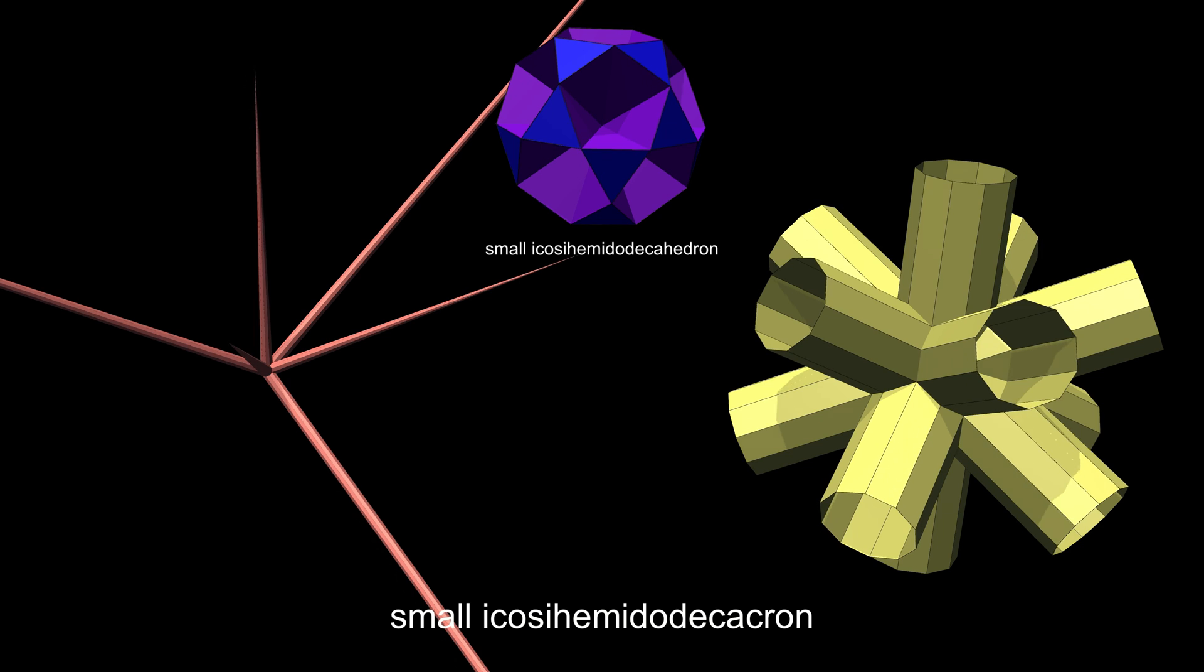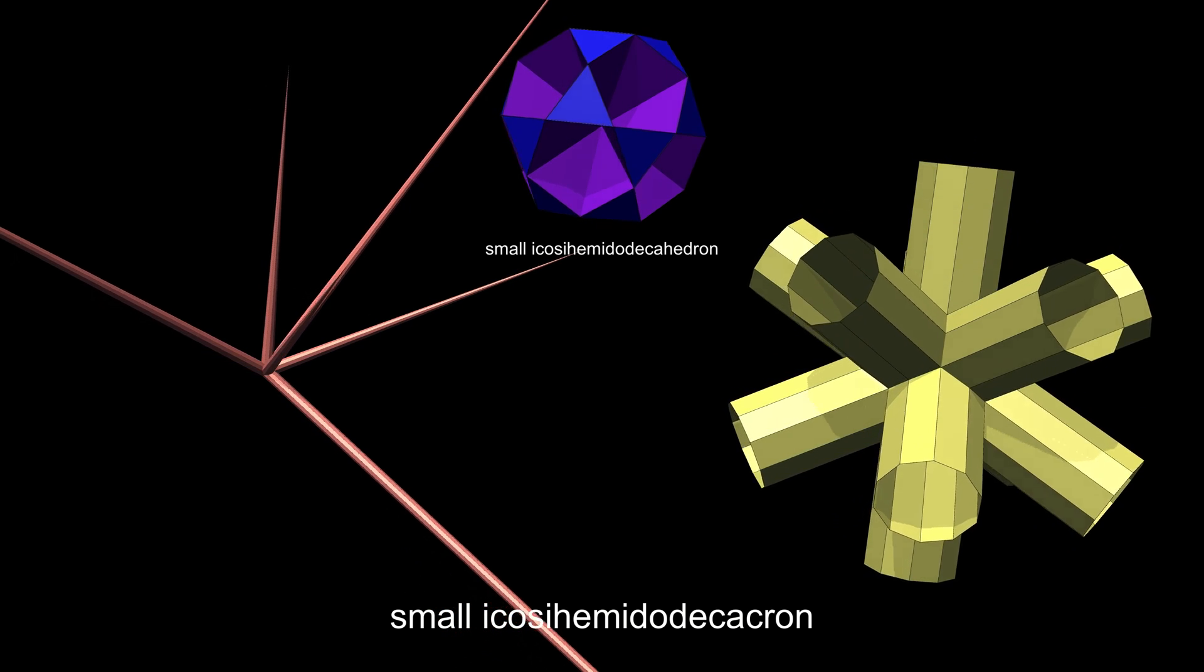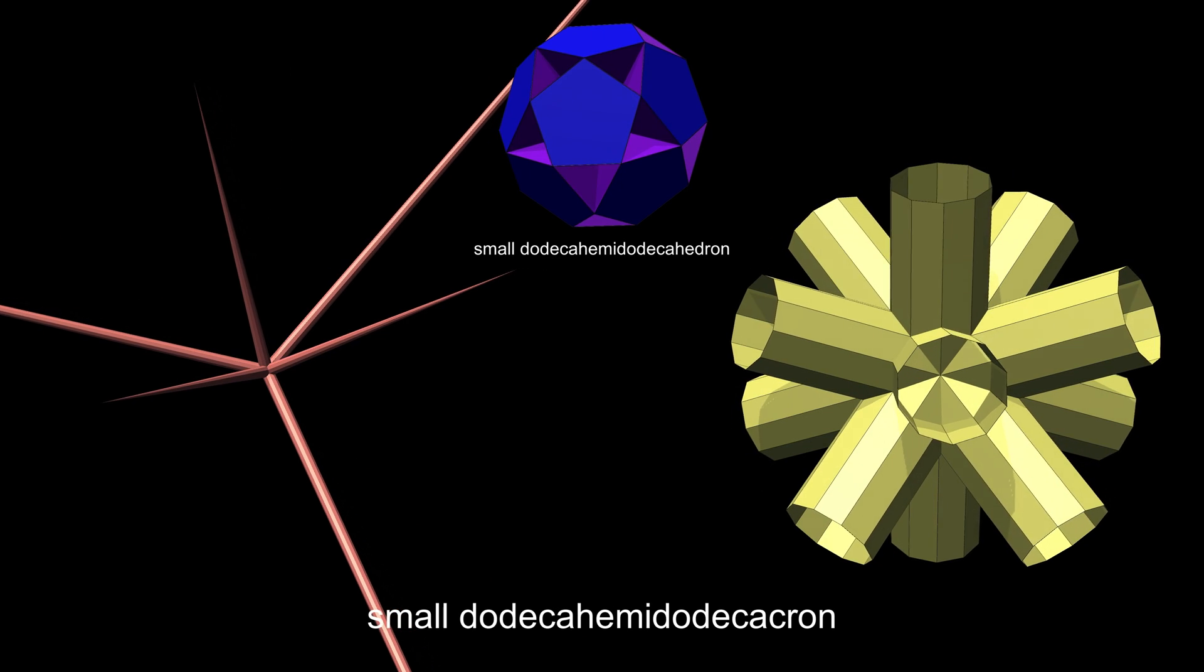The dual of the small icosihemidodecahedron has six octagonal spikes or prisms, and has the same appearance as the next figure, the dual of the small dodecahemidodecahedron.